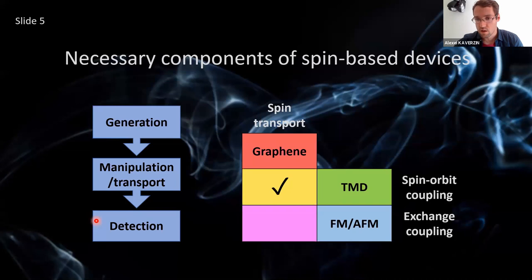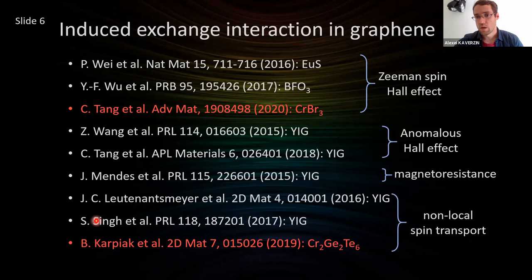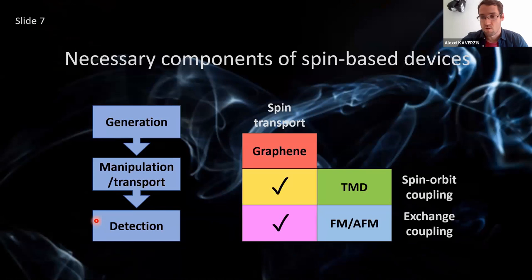What about exchange interaction? How can we put it into graphene? There's a list of works done over the last years, and it has been more or less successfully demonstrated that it's possible to induce exchange interaction in graphene via proximity effect. However, from all these experimental realizations, the induced exchange interaction is either too small to be used for manipulation or detection of spin, or it implies very large magnetic fields of a few Tesla — so it's practically not very relevant.